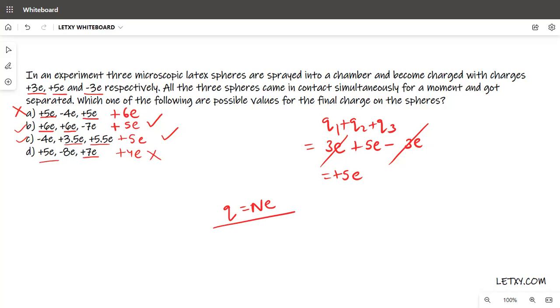You can see option C has 3.5e and 5.5e. Now 3.5 is not an integer. We have to understand that 3.5e is not possible because an electron is not divisible. The charge on an electron can't be divided. Either one, two, or three electrons will be transferred, but 3.5 electrons can't be transferred.